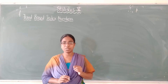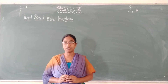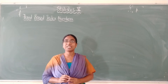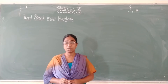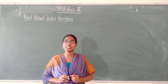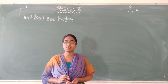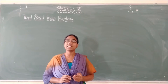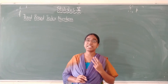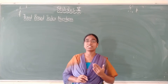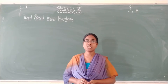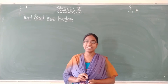Among those index numbers, what is the best index number, and how do you decide? By using the criteria of index numbers. There are four criteria, and whichever index number formula satisfies the maximum number of tests is said to be the best index number. We have seen that Fisher's index number satisfies three tests, which is the maximum, and that is why Fisher's index number is considered the ideal index number.